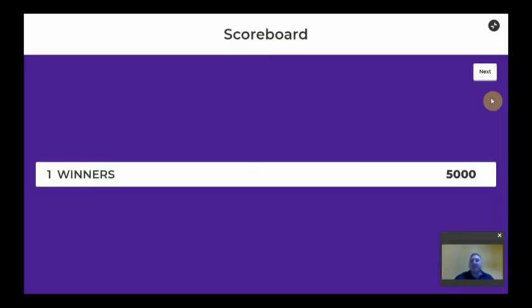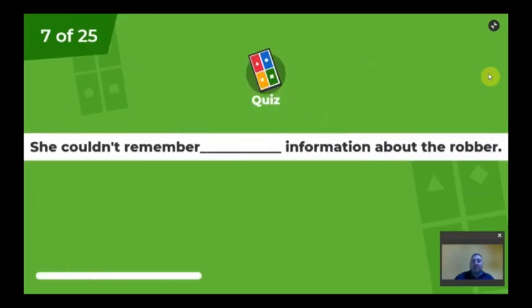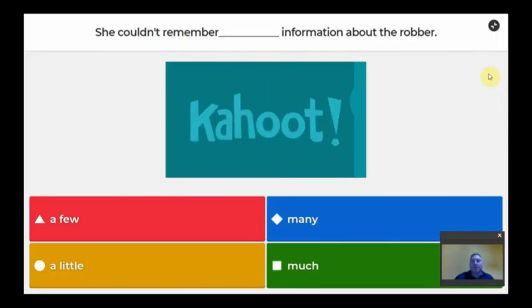Question number seven: she couldn't remember information. Remember immediately - this is very important. Information is uncountable. You can't count one information, two informations. If it's uncountable, she couldn't remember a lot of information, data, etc. We can only use with uncountables: much.